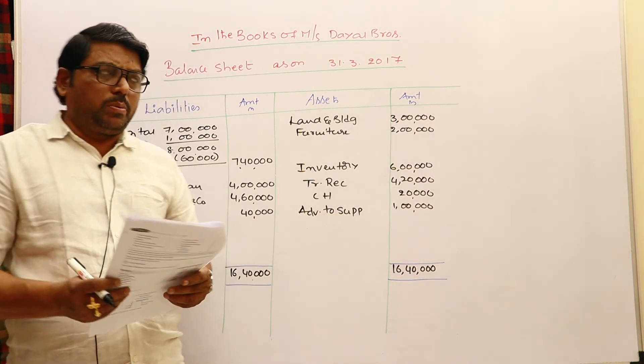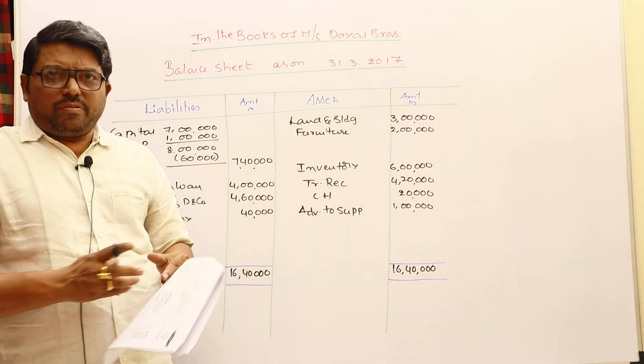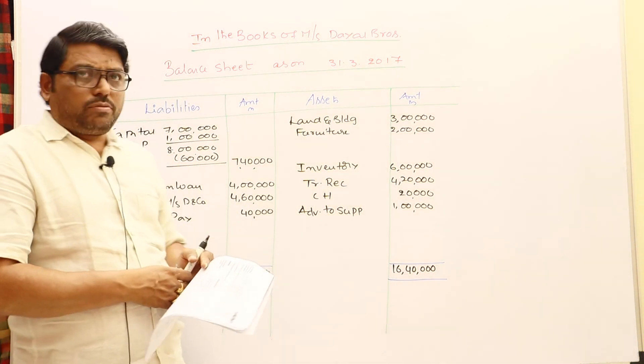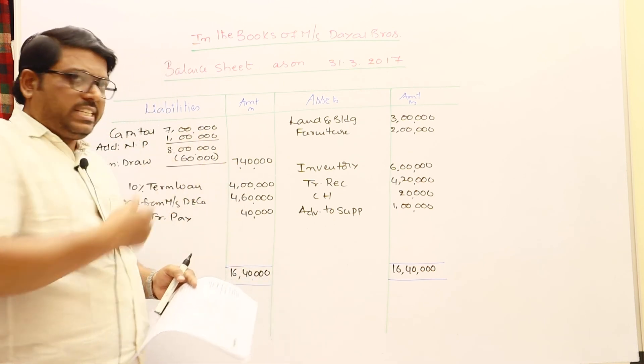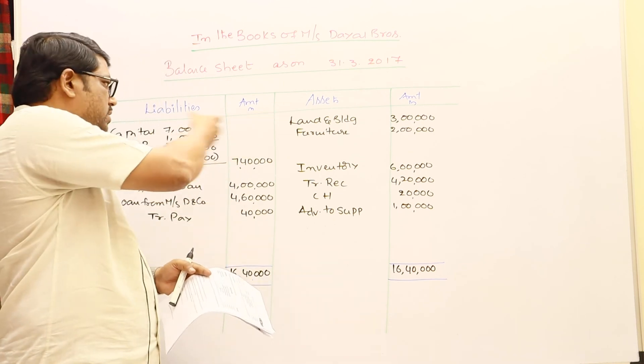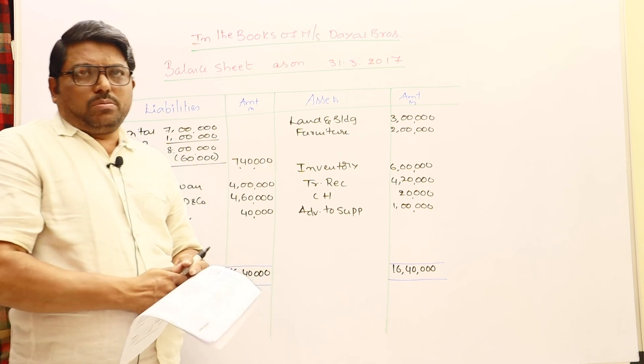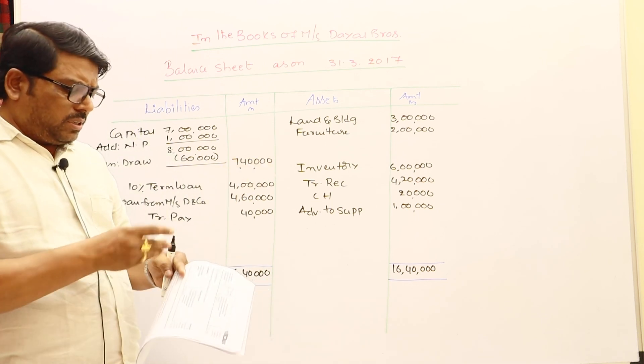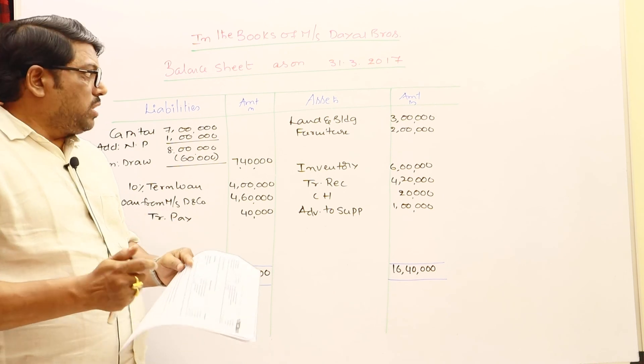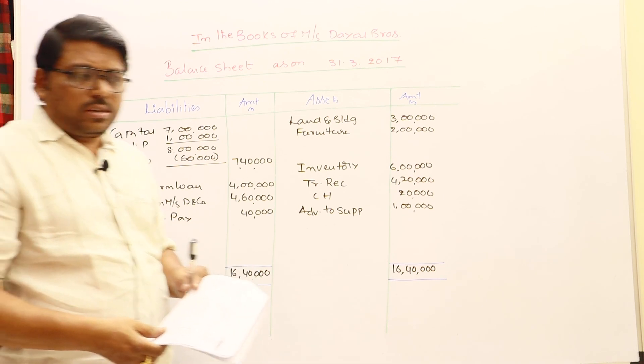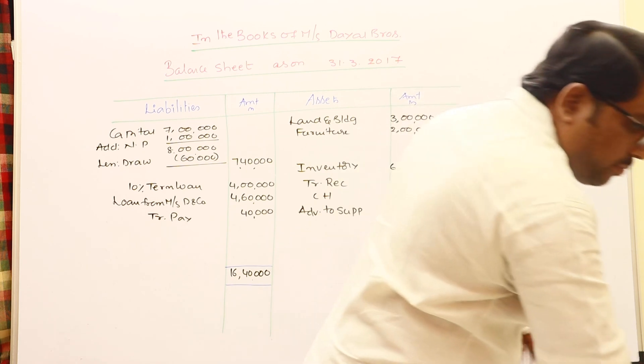That's all. This is a simple way to prepare the balance sheet by the provided particulars. And of course we followed here rigidity preference method, so fixed assets and capital at the top, current assets and current liabilities at the bottom. Of course you may follow any particular method, there is no problem. We can discuss the next problem in the next class.